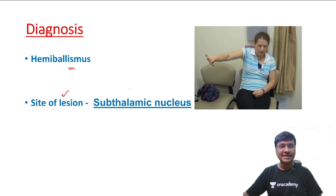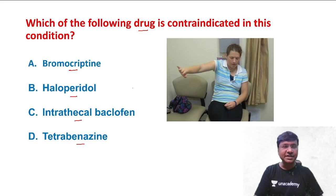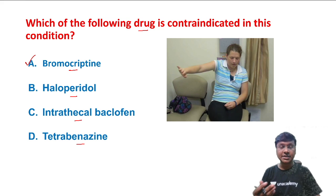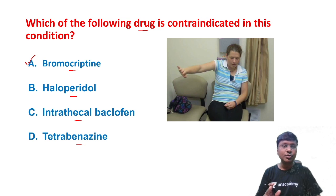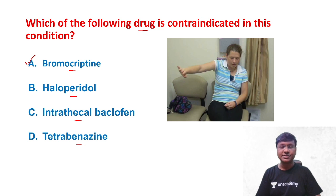The site of lesion for the development of hemibalismus is the subthalamic nucleus. If a patient has hemibalismus, you should not give dopaminergic drugs. The dopamine agonist among the options is bromocriptine, so bromocriptine should not be given to patients with hemibalismus.